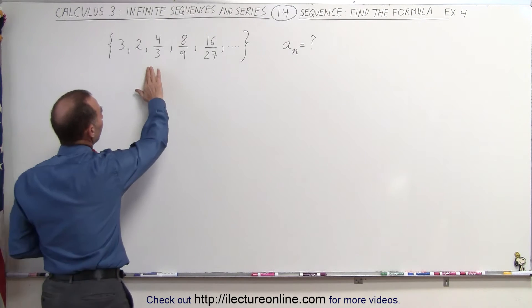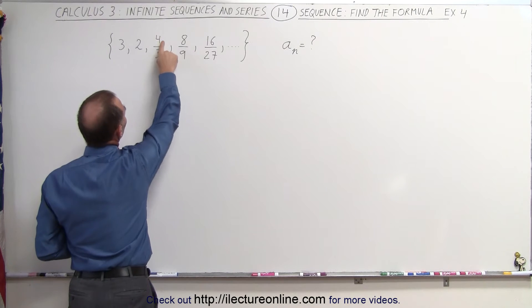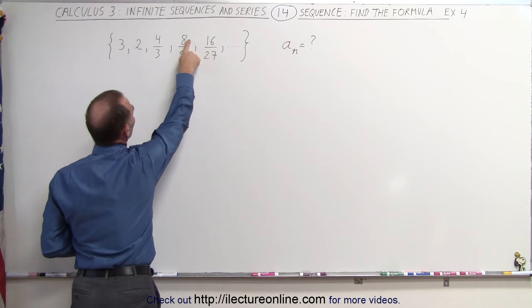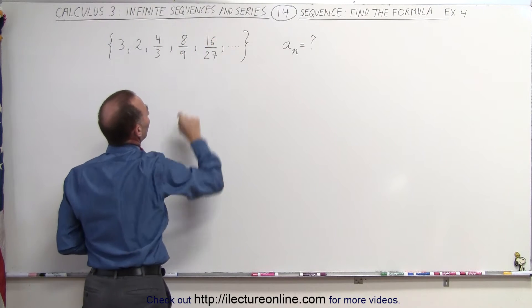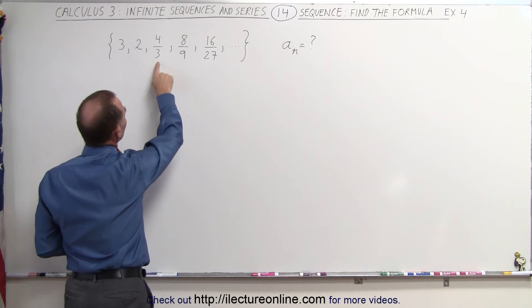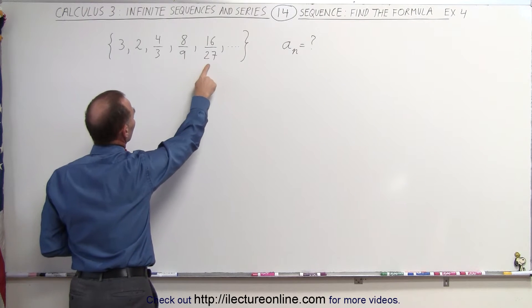Notice that from here on out things seem to make sense. We have 4, which could be 2 squared, 2 cubed, 2 to the fourth power for 16. On the denominator, 3 to the first, 3 to the second, 3 to the third.